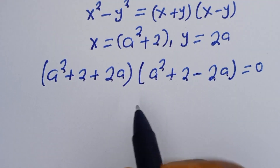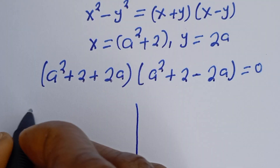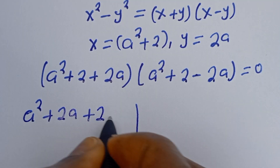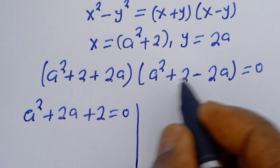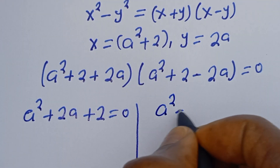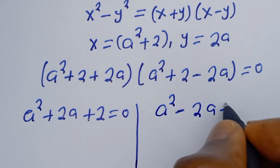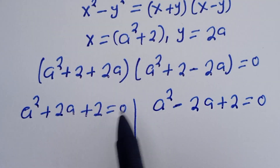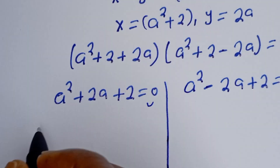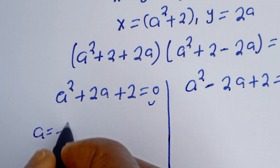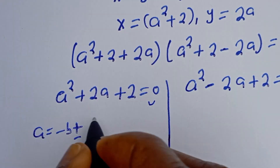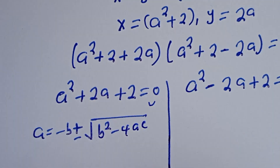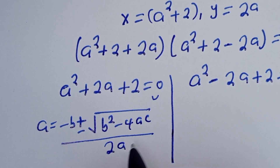Then there are two cases here. The first case is a squared plus 2a plus 2 equals 0. And the second case is a squared minus 2a plus 2 equals 0. They are both quadratic equations, which can be solved using the quadratic general formula.